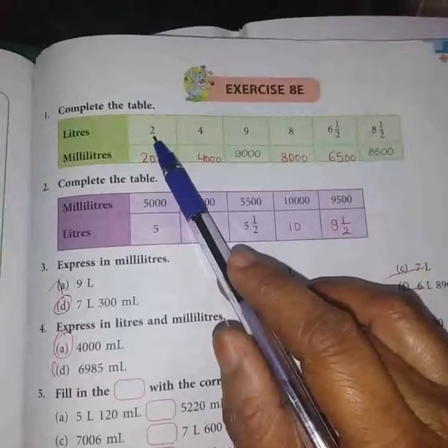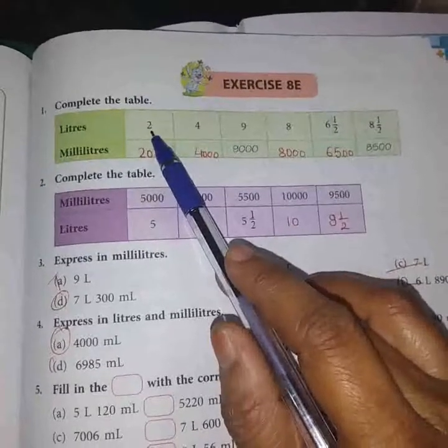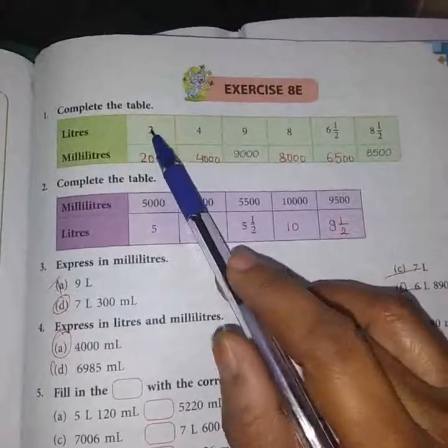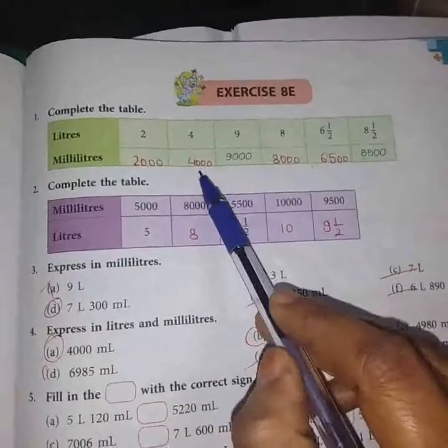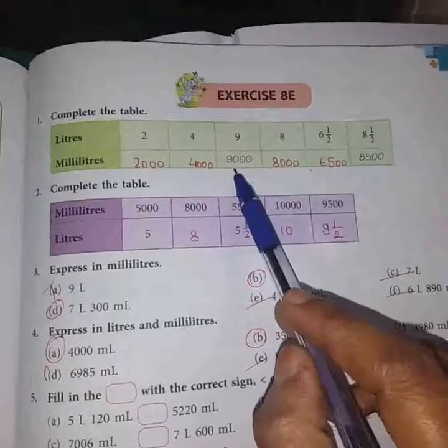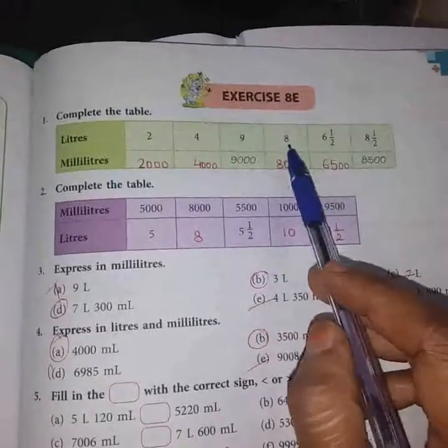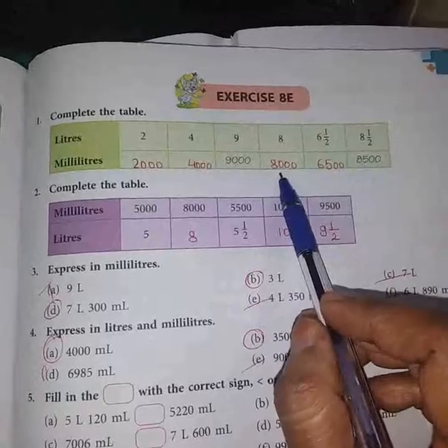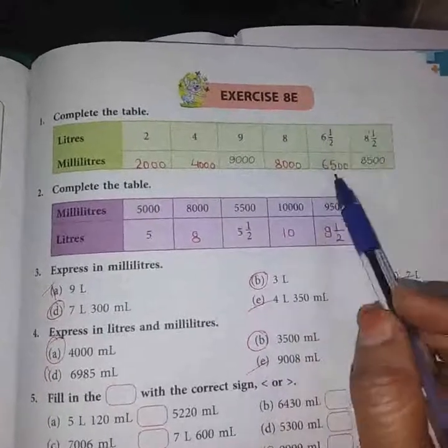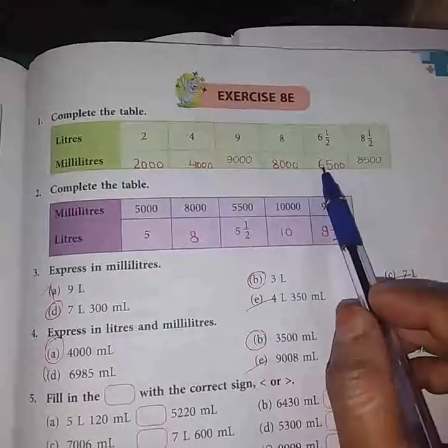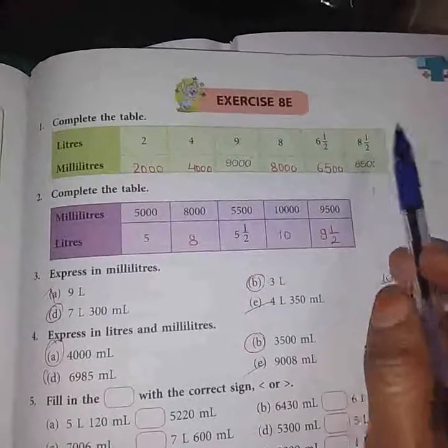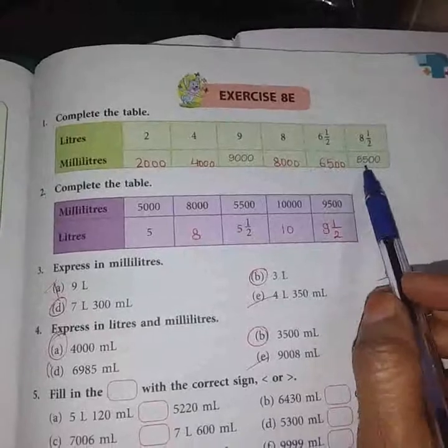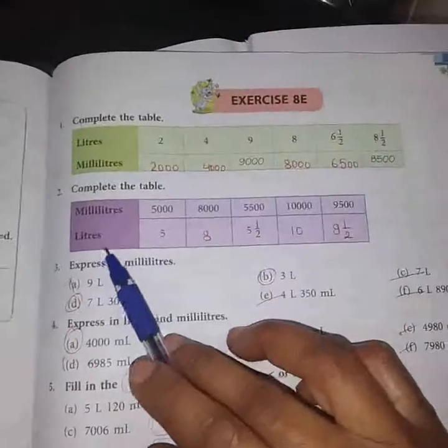We must know that 1 liter equals 1000 ml, so 2 liters equals 2000 ml, 4 liters equals 4000 ml, 9 liters equals 9000 ml, 8 liters equals 8000 ml, 6 and a half equals 6500 ml, and 8 and a half equals 8500 ml.